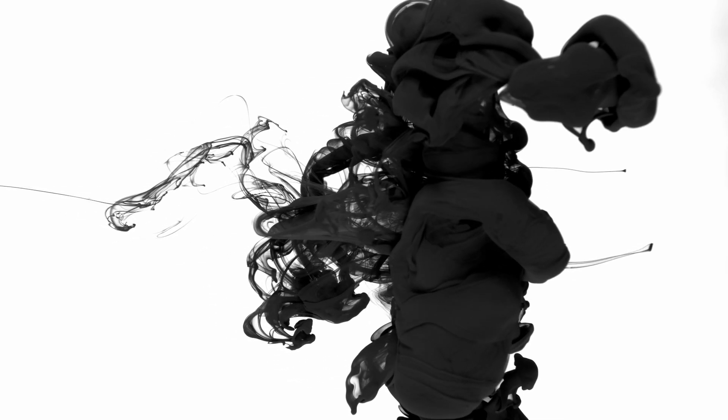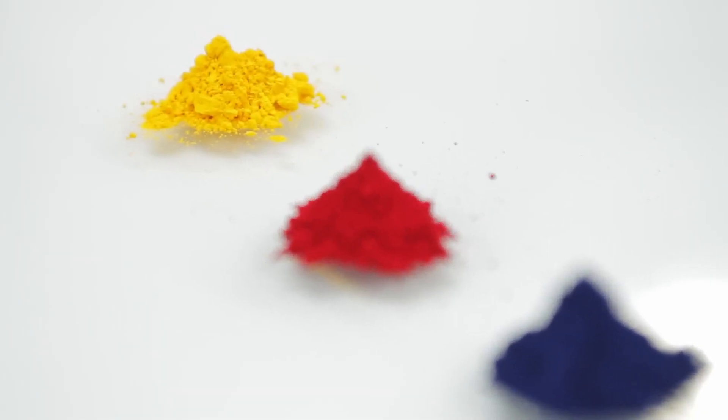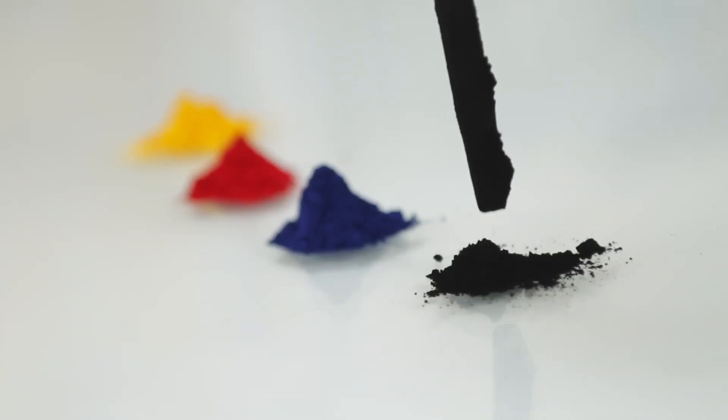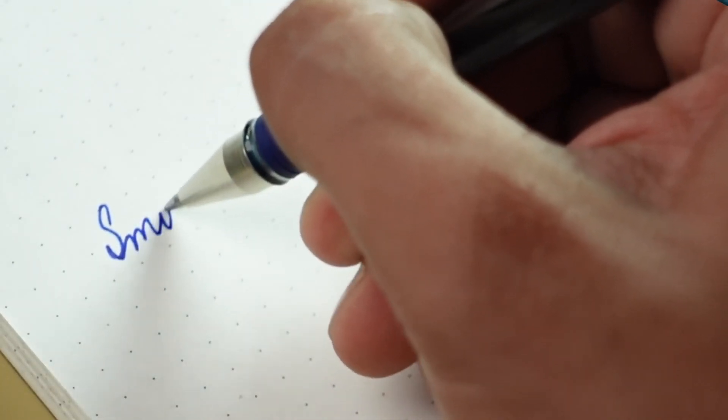A solvent, which is usually an oil-based material like benzyl alcohol or phenoxyethanol, is one of the main parts of ballpoint pen ink. They help the color pigments or dyes move around, which lets the ink flow easily from the container to the paper through the ball tip.